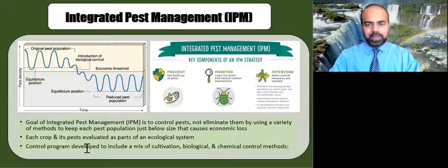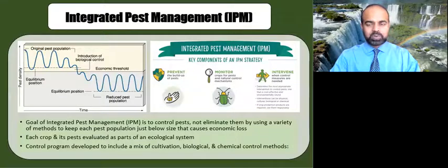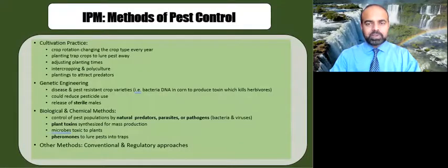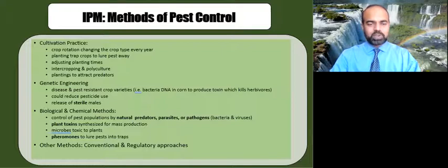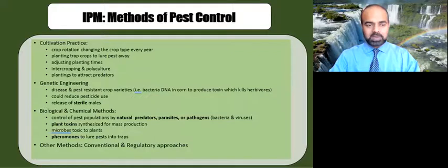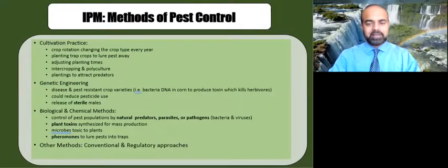Each crop and pest are evaluated as parts of an ecological system, and a control program is developed that includes a mix of cultivation practices, biological methods, and chemical control methods. Many tactics keep pest populations off balance and avoid the development of resistance to pesticides. Least toxic effective methods are used before more toxic ones whenever possible. The goal of using multiple tactics — like many small hammers — is to effectively suppress pests below injurious levels and avoid outbreaks.